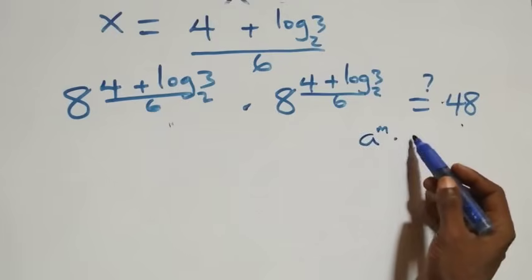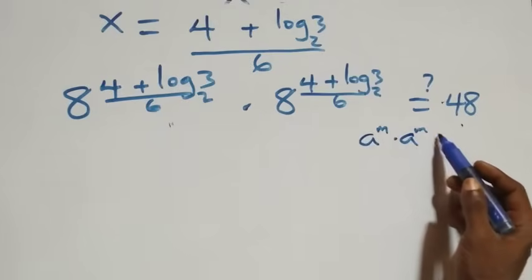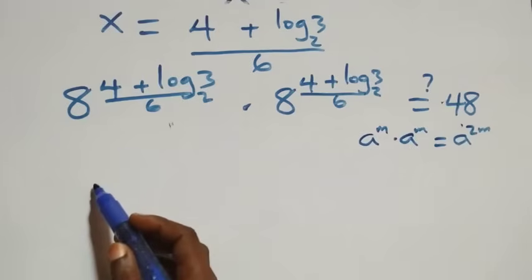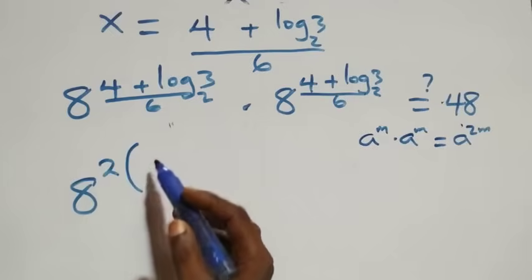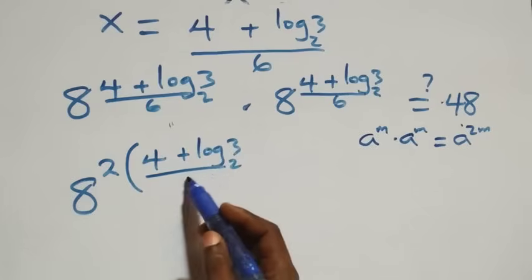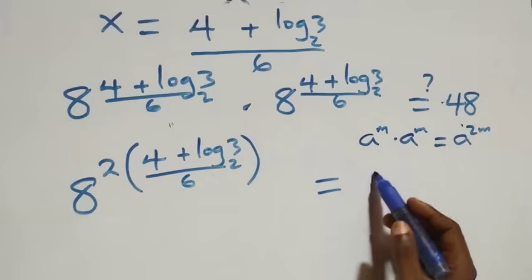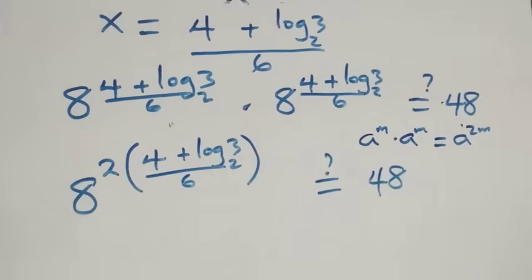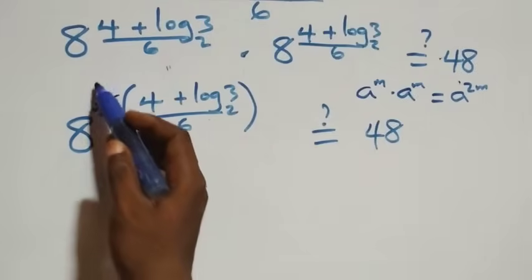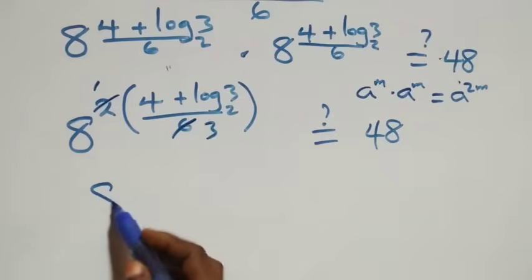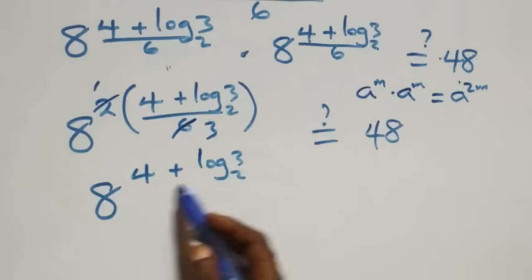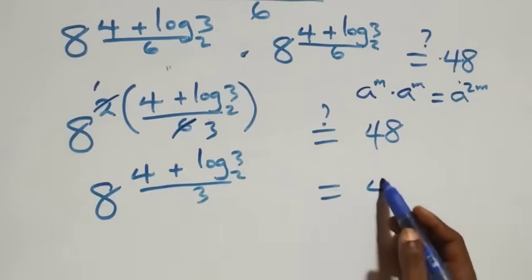Using the law of indices — a^m · a^m = a^(2m) — we can write this as 8 raised to power 2·(4 + log₂3)/6 equals 48. Since the 2 and 6 simplify, we get 8 raised to power (4 + log₂3)/3 equals 48.